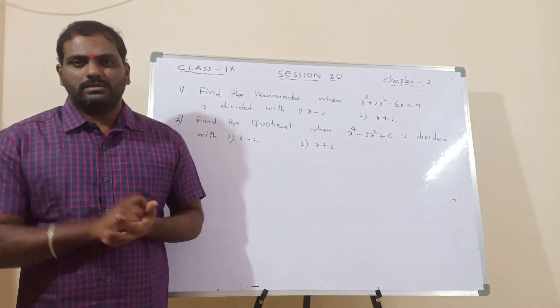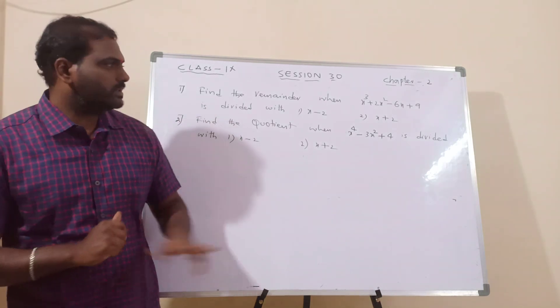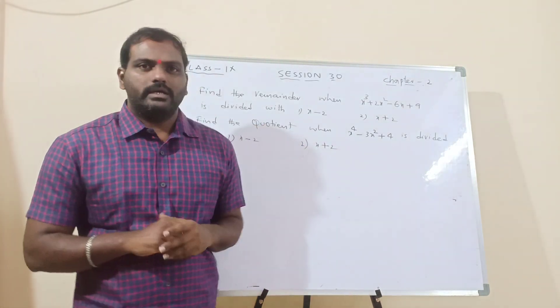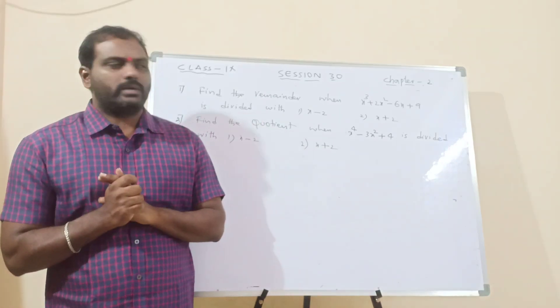That means, what we have to do? x plus 2 is equal to 0, x is equal to minus 2. That means, what we have to find it out? We have to find it out p of minus 2. Okay.